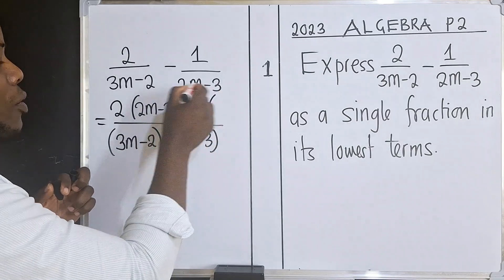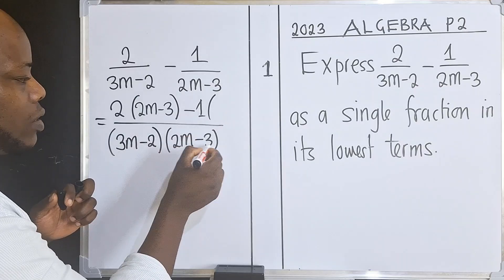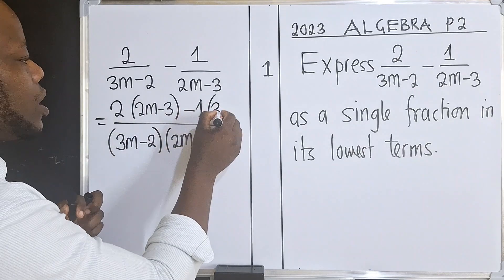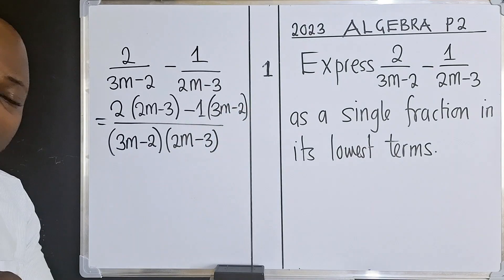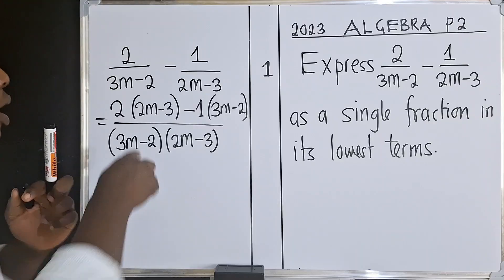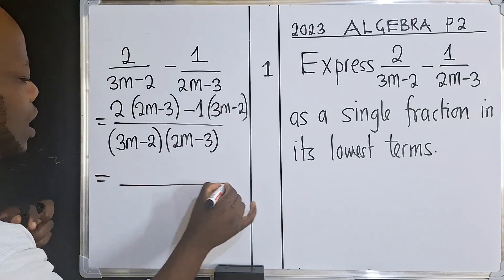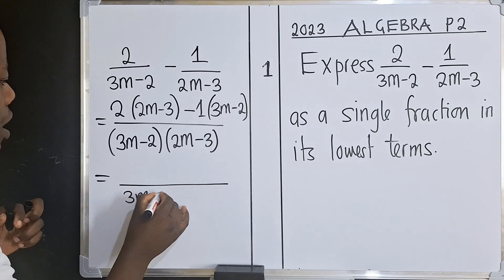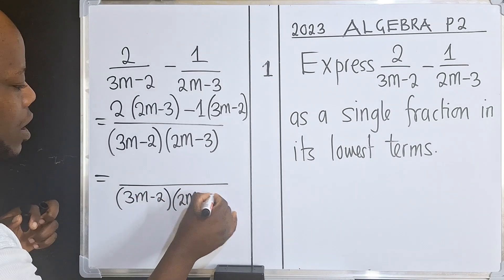Check the value or the denominator here, which is 2m minus 3. It's this one. So don't get it, get the opposite, which is 3m minus 2. This is what you do. And when you do this, you now simplify on top here. For the denominator, we maintain it — that is 3m minus 2, times 2m minus 3.